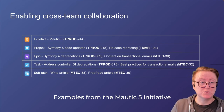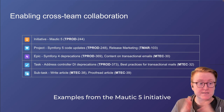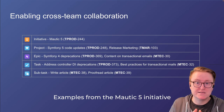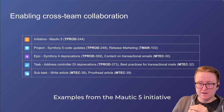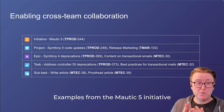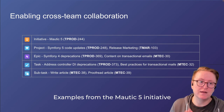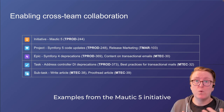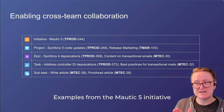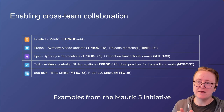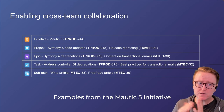Then we've got the epics — the collection of things that need to get done for a project to be completed. For the Symphony 5 code updates, one epic covers the deprecations removed from Symphony 4, and there are lots of other epics in that project. Another epic in the release marketing project involves content we want to write to educate the community about transactional emails — why you would send transactional versus marketing, what the difference is. That's under M-TECH 30, the marketing team's editorial calendar.